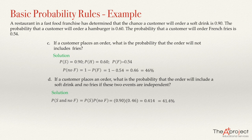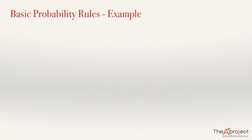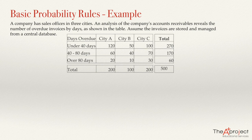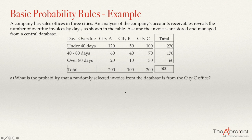This example was a simple way of using these probability rules. Let's solve a different problem. A company has sales offices in three cities. An analysis of the company's accounts receivables reveals the number of overdue invoices by days as shown in the table. Assume the invoices are stored and managed from a central database. What is the probability that a randomly selected invoice from the database is from the CDC office?